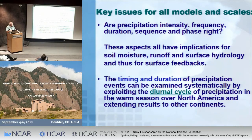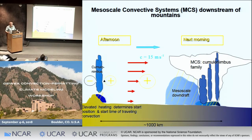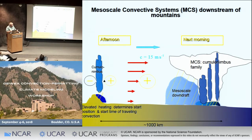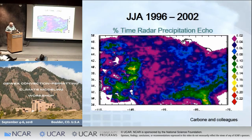One way we've looked at intensity duration frequency is by examining the diurnal cycle of precipitation, especially in warm season over the United States. The main storm systems producing precipitation in the central US are MCSs that typically form right over the Rocky Mountains and propagate to the east, producing the classic midnight convection over Kansas and Iowa.